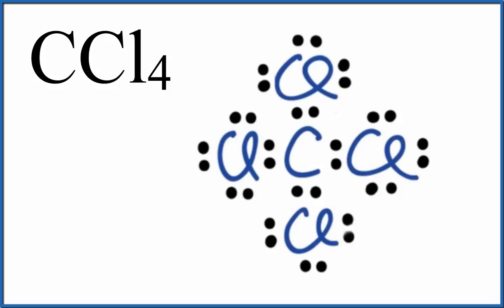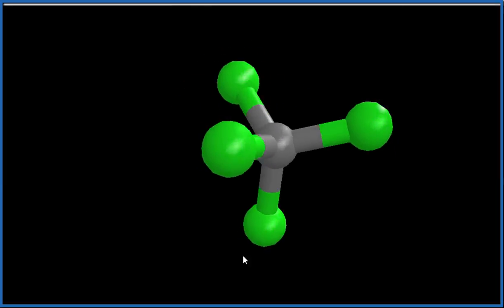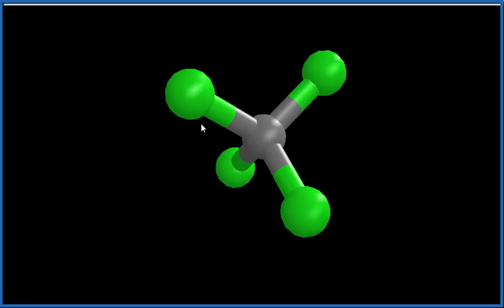So each of those chlorine atoms, because they're surrounded by electrons, they're going to spread out as far away from each other as they possibly can. And that'll give us this shape right here. You can see the chlorines, they're spread out as far away as they can from each other, while still being bonded here to the central carbon atom.